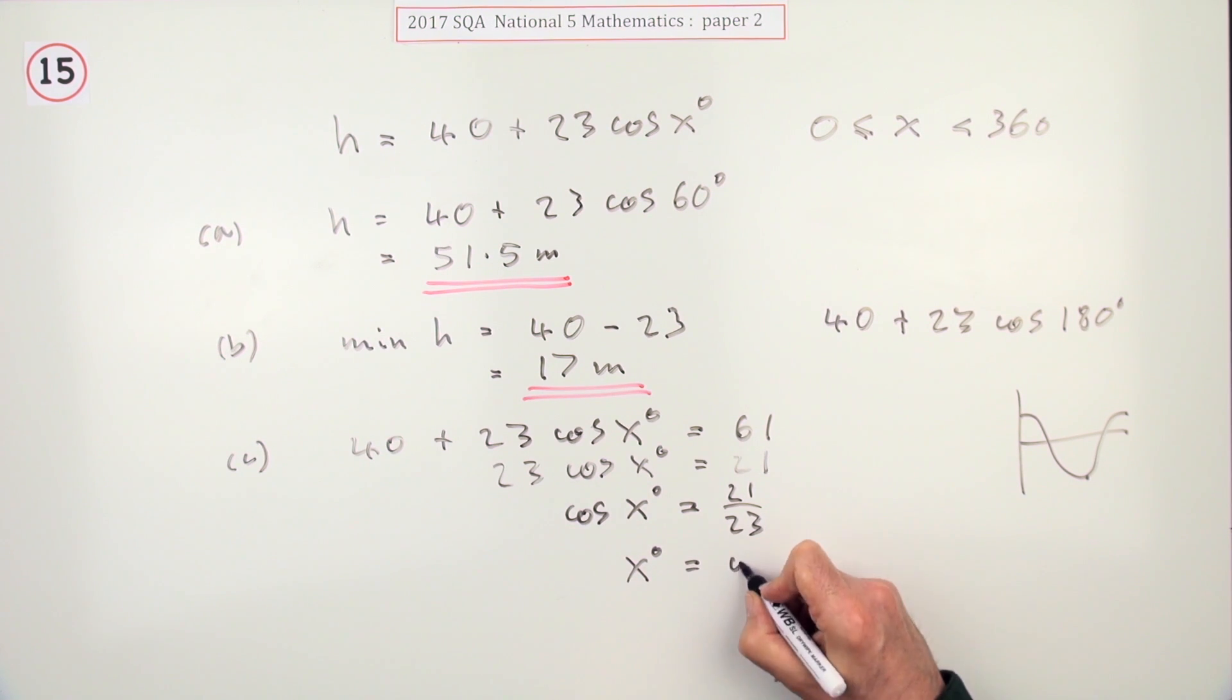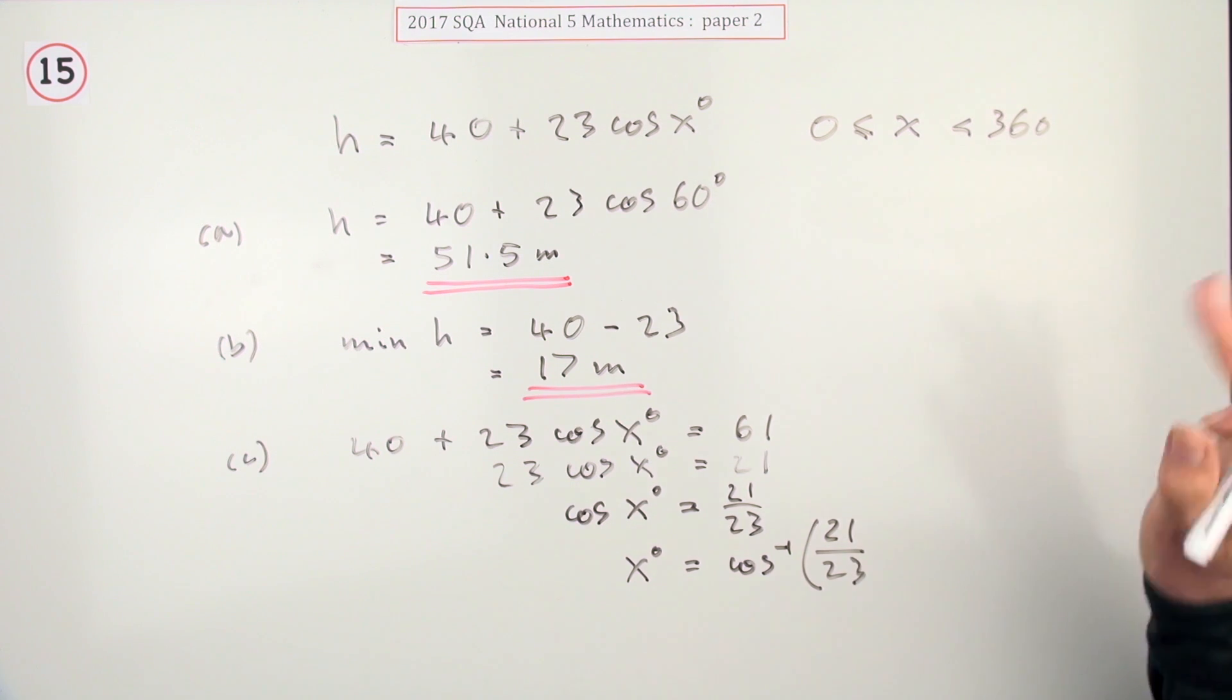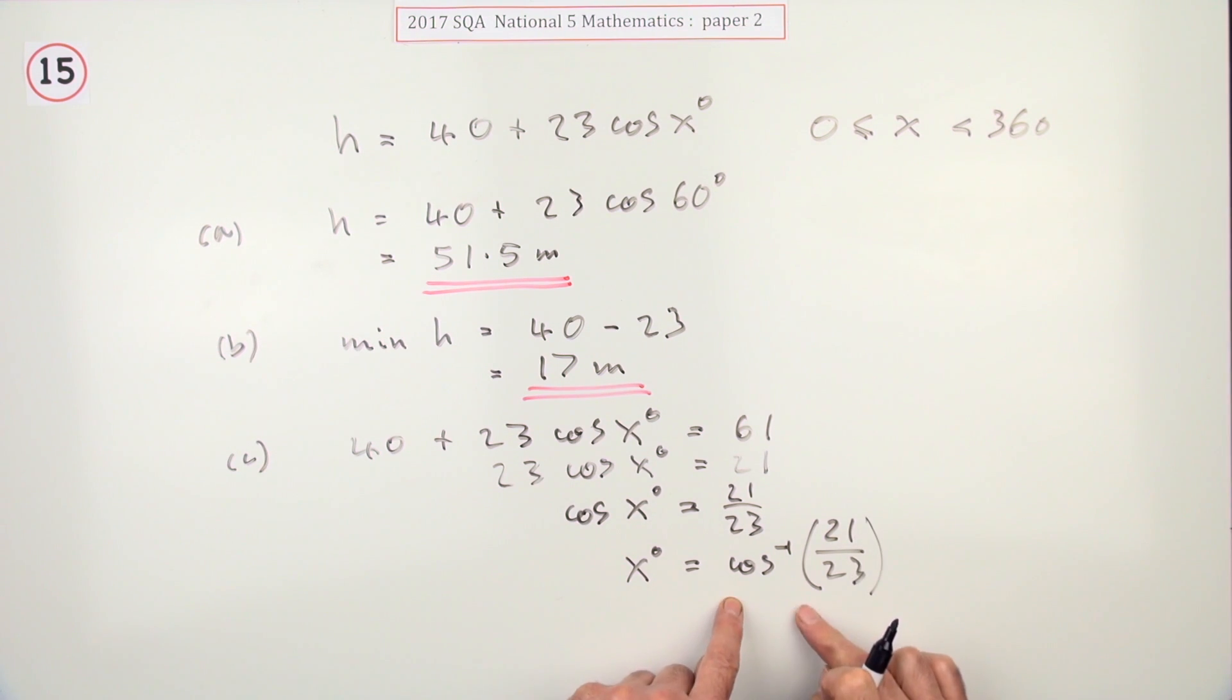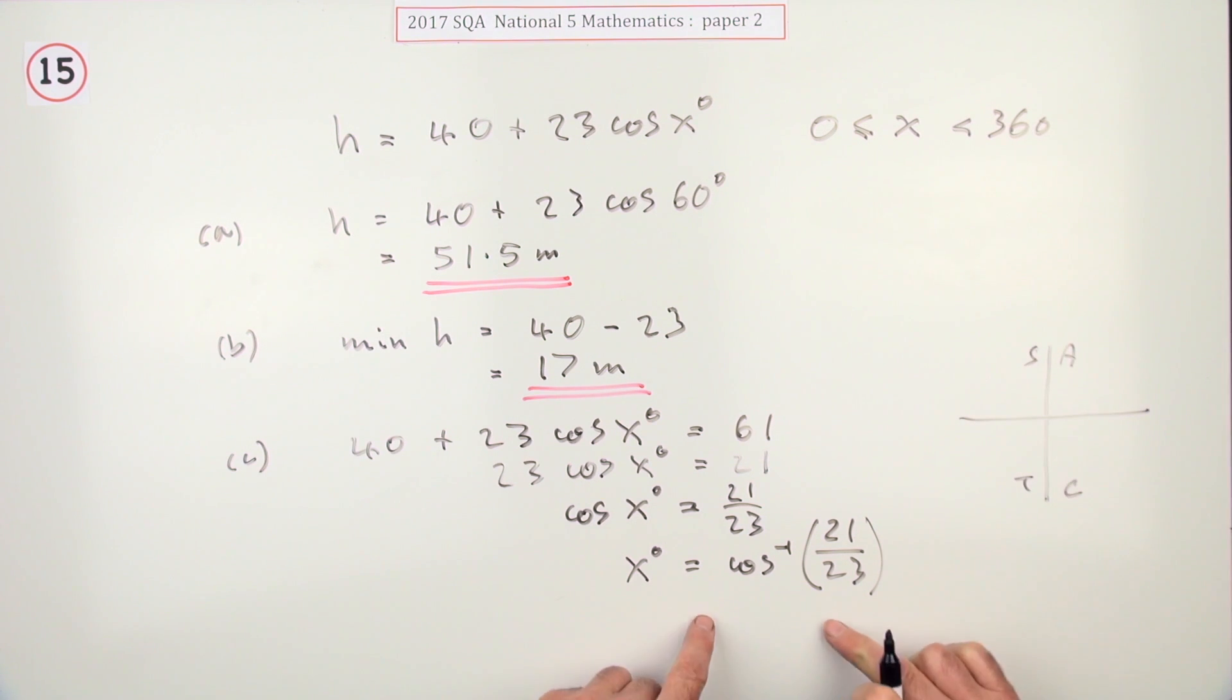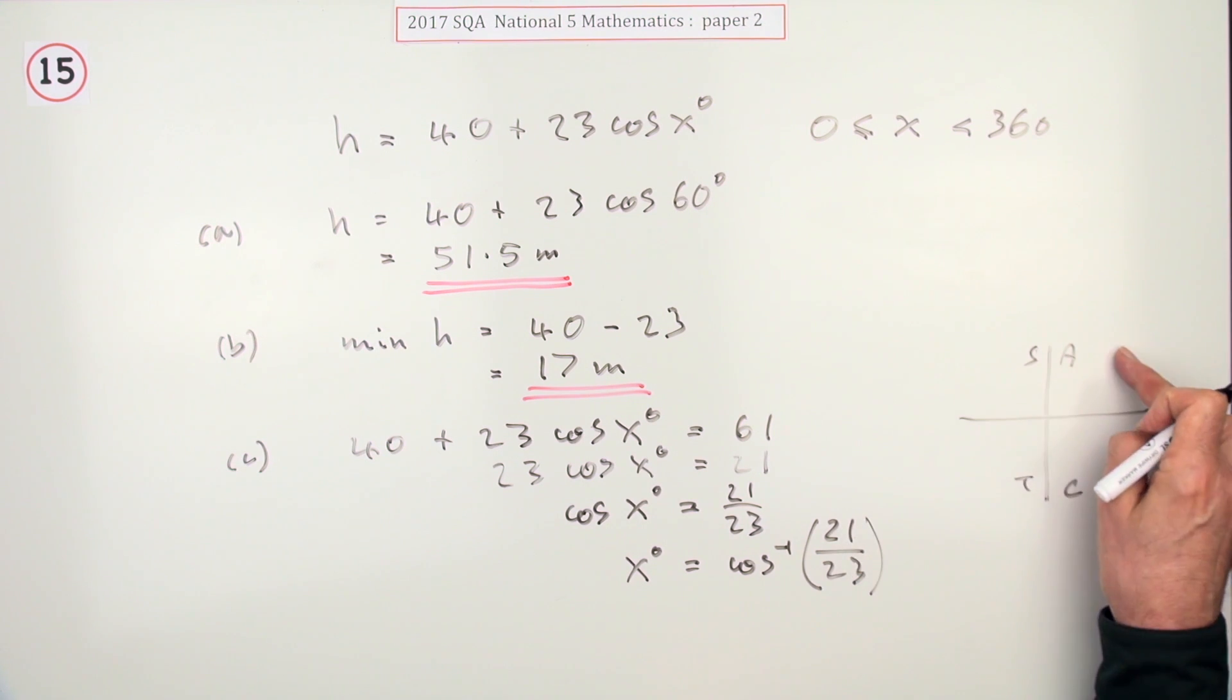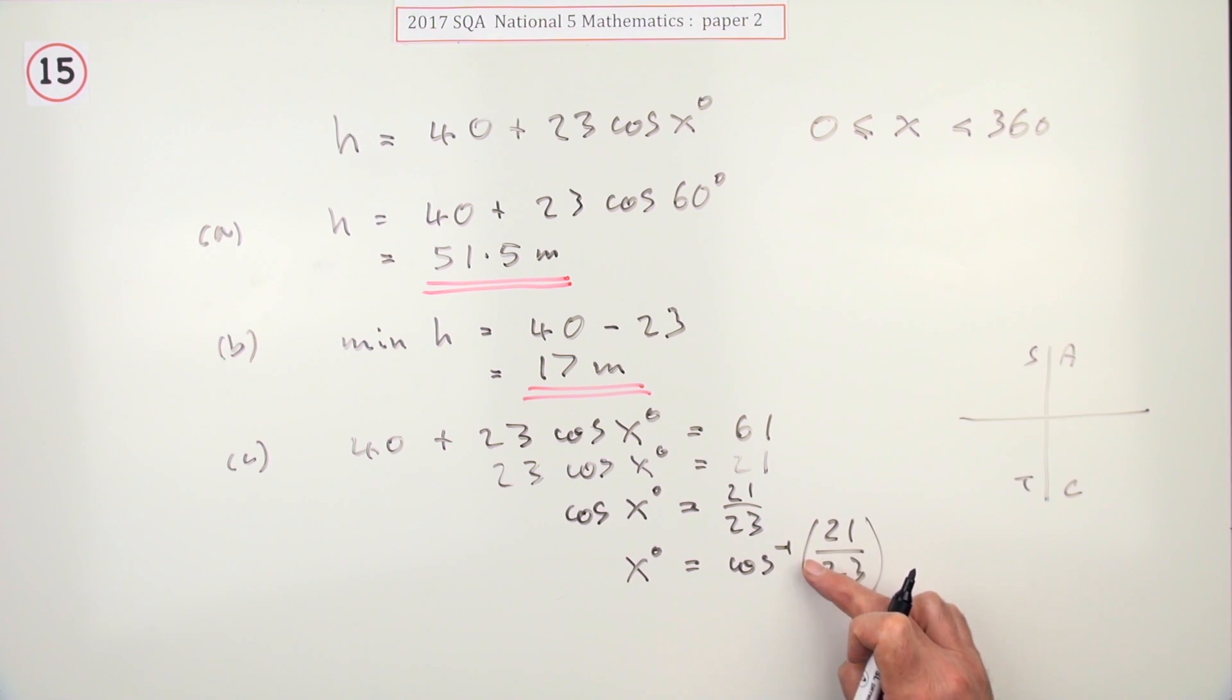There'll be two answers to this. You'll be using your CAST diagram - all sine, tan, cos - to get the two angles. The two parts would be: use the values to get the acute angle, and the sign of it as in positive or negative to place it.